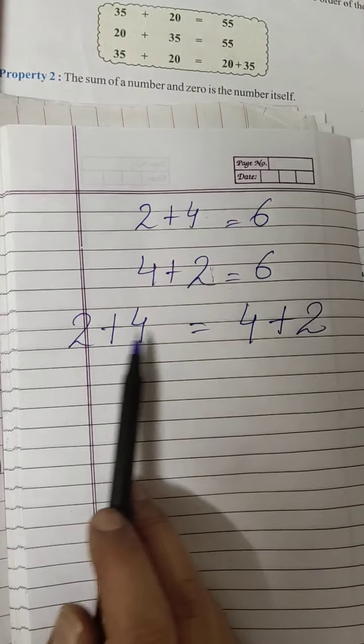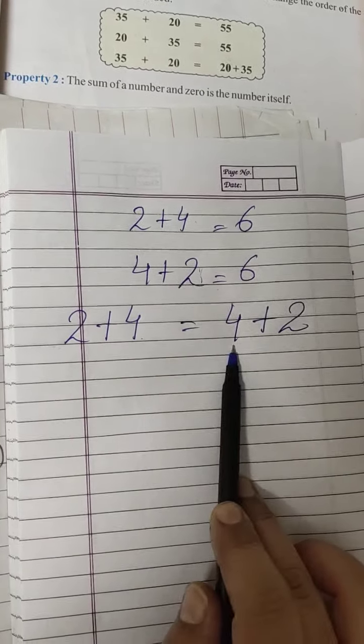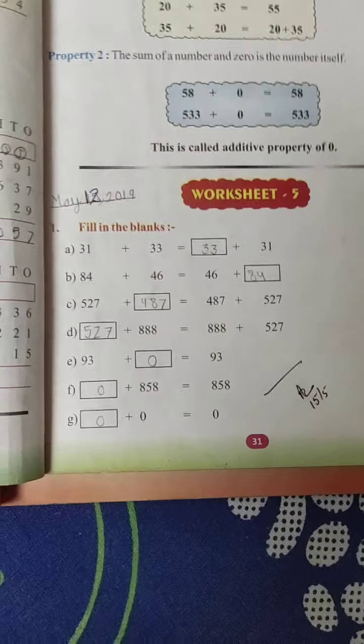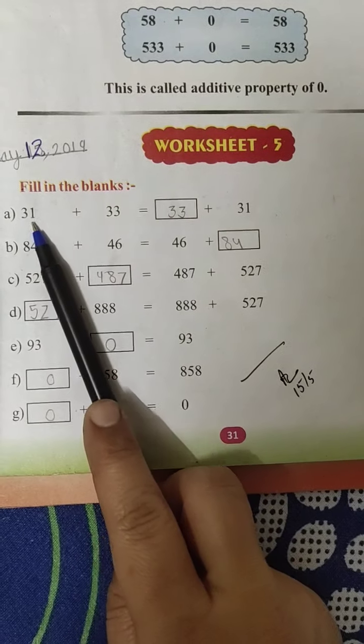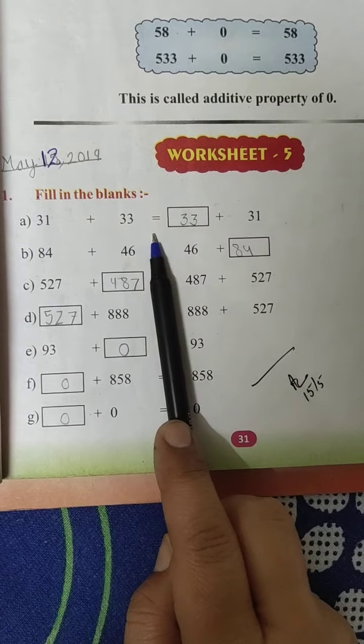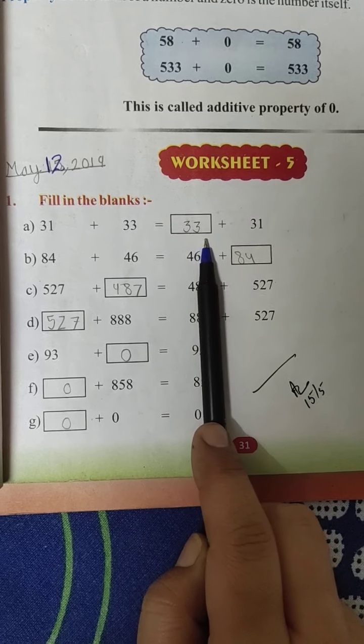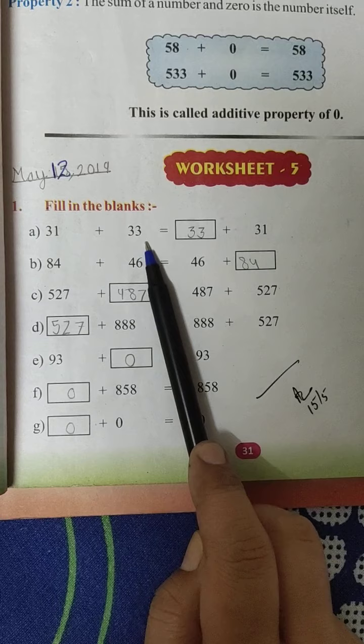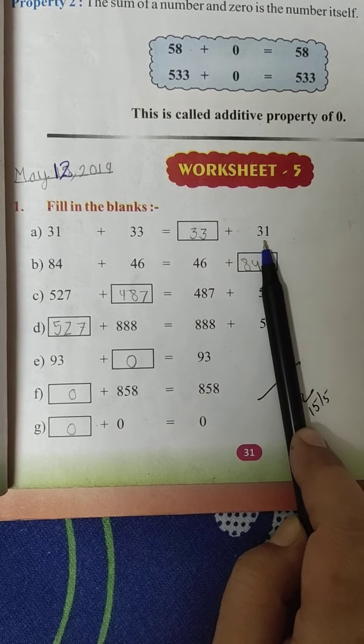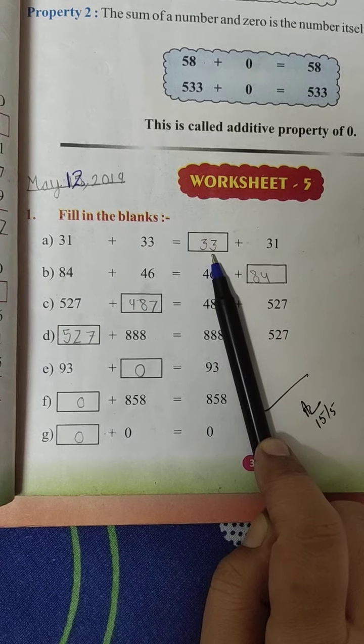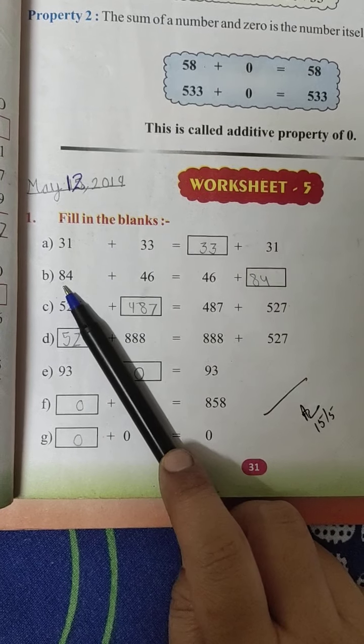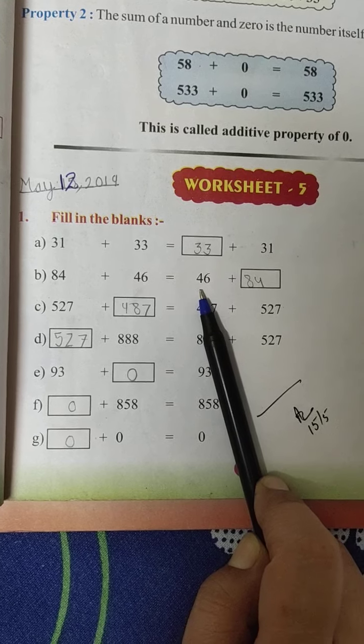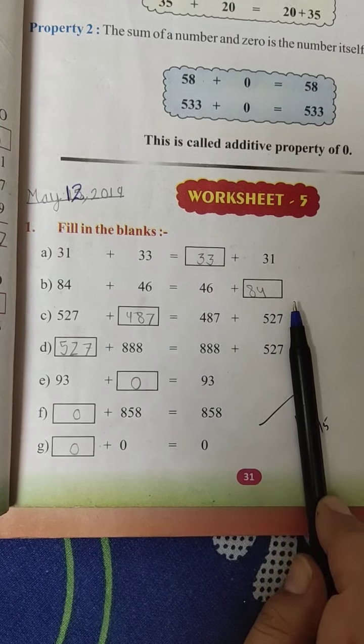This is your exercise. Now see: what is this? 31 plus 33 is equal to blank plus 31. See, on this side what is written? 31 and 33. On this side, what is written? 31. What is remaining? 33. Write that there. Similarly, 84 plus 46. On this side, what is written? 46. So on the right side, what will come? 84.